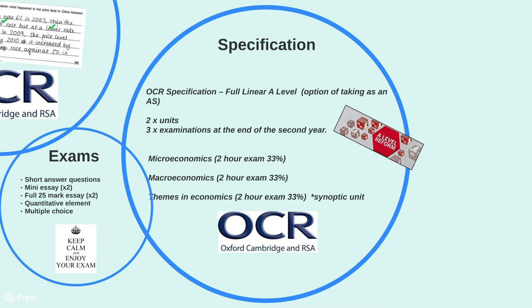There's also a final third exam paper called Themes in Economics, which is a combination of both micro and macroeconomics. We call this a synoptic unit because it brings together the skills and content from both sides of the syllabus. So there are three exam papers in total but two main branches of the syllabus — micro and macroeconomics.